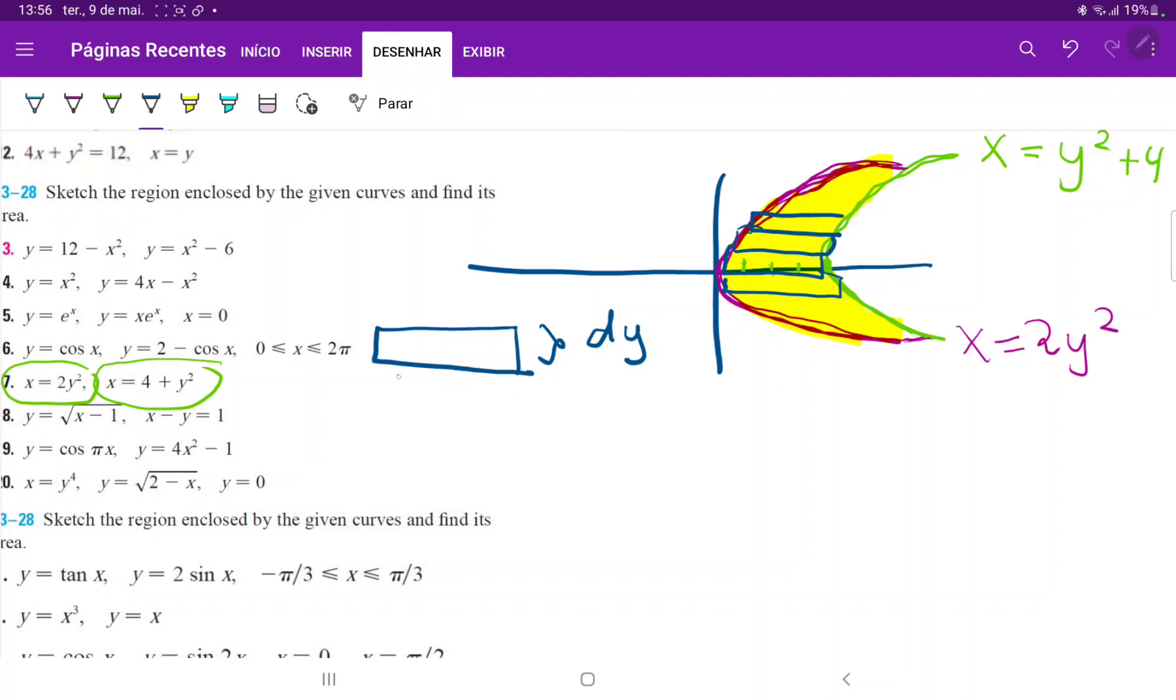And for the length, we just have the upper equation, which is y squared plus four, minus the lower equation, so minus two y squared.